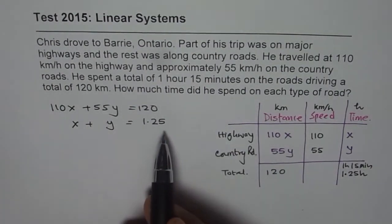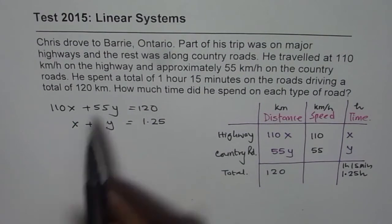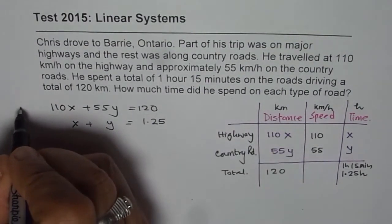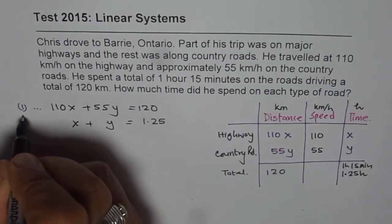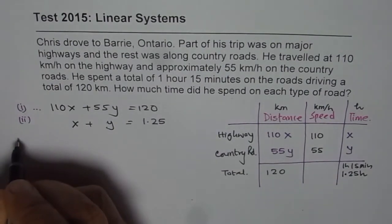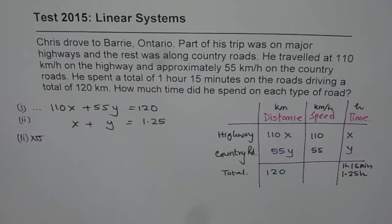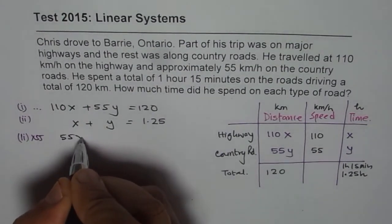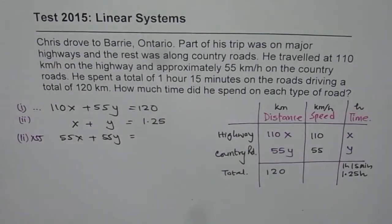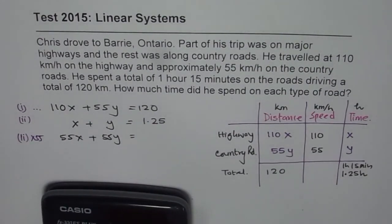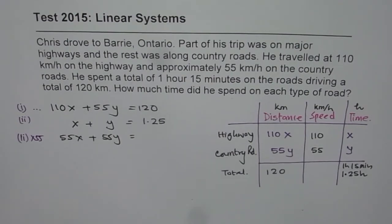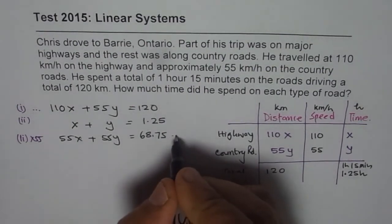Here you can use either elimination or substitution. What I will do is multiply equation 2 by 55. So these are the two equations — equation 1 and equation 2. Multiplying equation 2 by 55 gives us 55x plus 55y equals 1.25 times 55. 1.25 times 55 gives us 68.75. Let's call this equation 3.